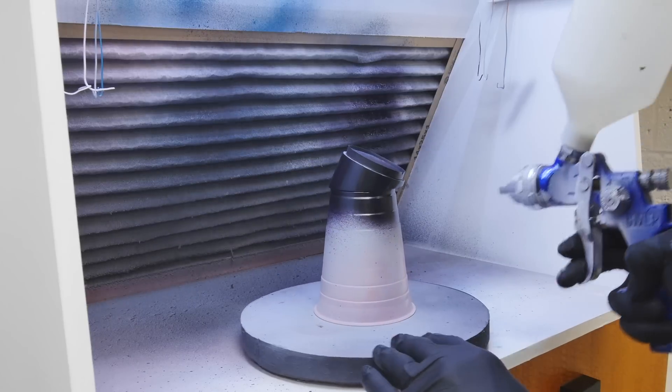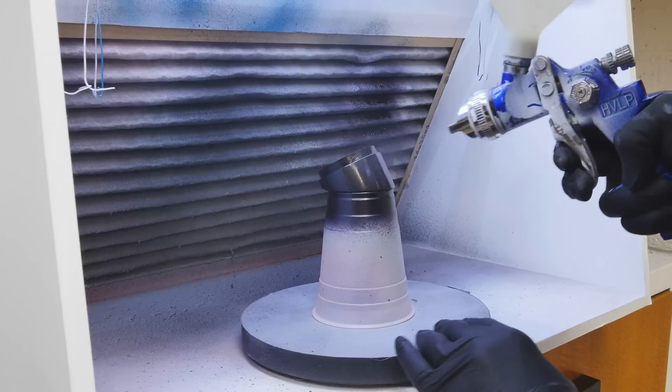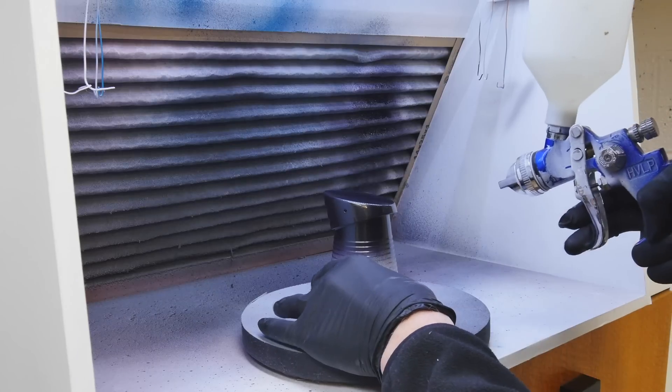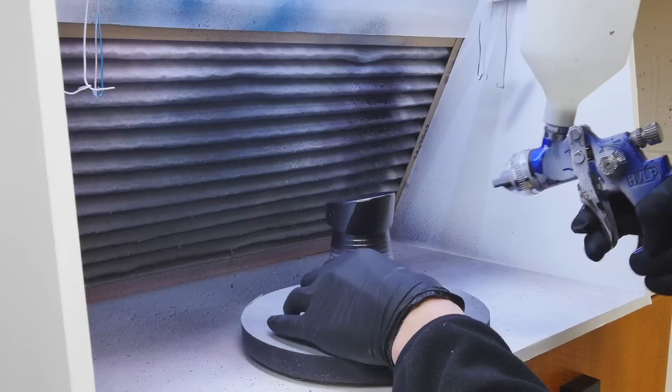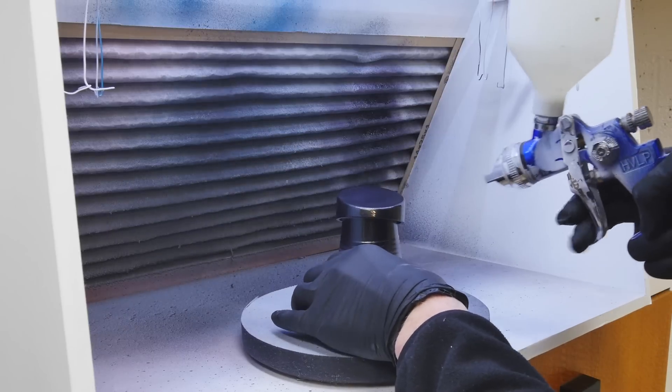Here's the bottom piece. Again, nice light coats. And I do two coats on each of the piece to get a really nice clear top coat.